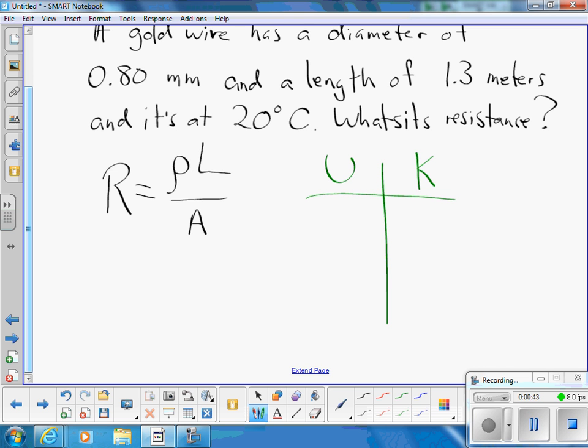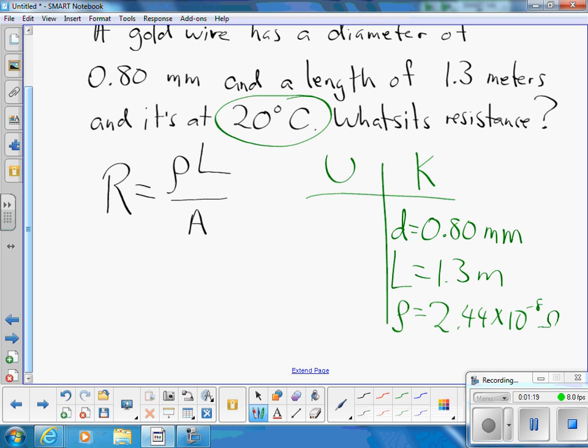What did it tell me? They tell me that the wire has a diameter, D, of 0.80 millimeters. They tell me it has a length, big fat L, of 1.3 meters, and they tell me it's made of gold. And I look up on my reference table, on the table of resistivities, and I find that gold at 20 degrees Celsius, oh looky, it's at 20 degrees Celsius, gold has a resistivity of 2.44 times 10 to the minus 8 ohm meters.